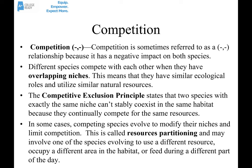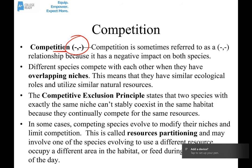Competition is considered to be a negative-negative type of interaction because it has a negative impact on both species involved. When different species compete with each other, they do so because they have overlapping niches. A niche is like an ecological role — where something lives, what it does, and the natural resources that it uses. When two species' niches overlap, they compete.